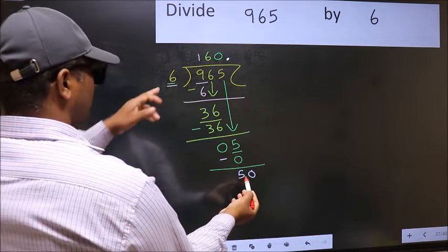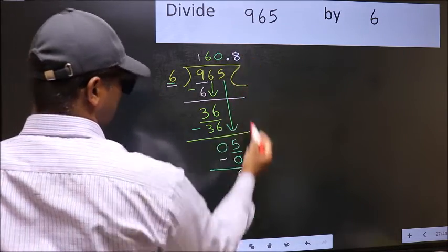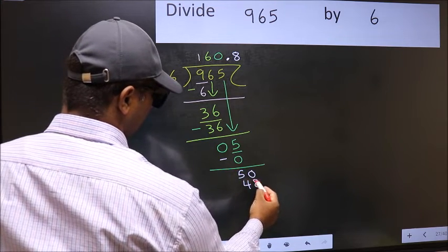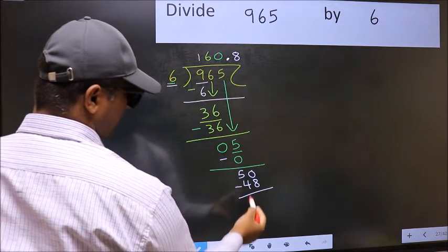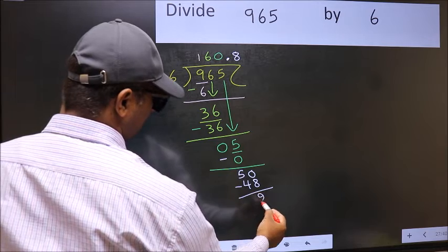A number close to 50 in the 6 times table is 6 times 8, which is 48. Now you subtract. 50 minus 48 is 2.